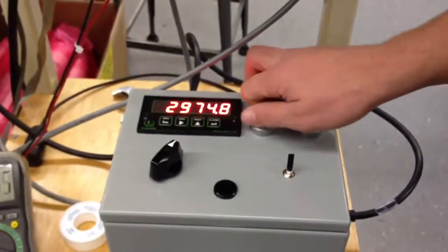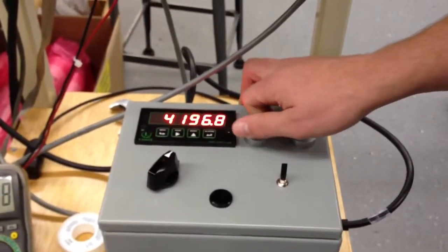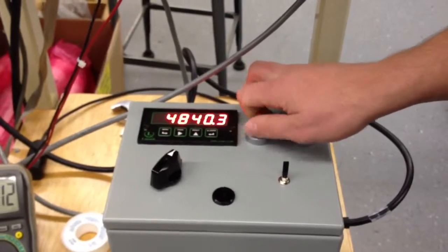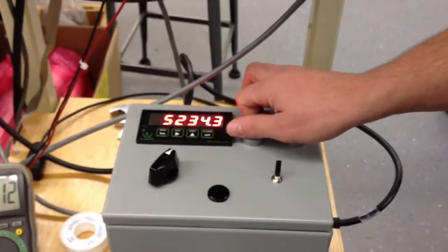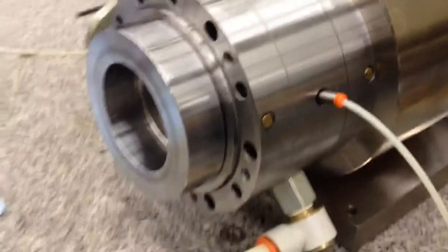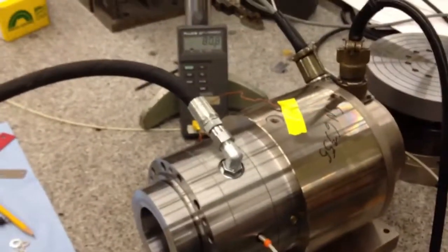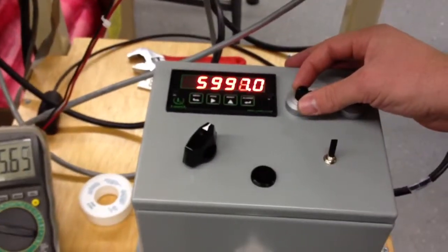All right, run it up. Three. There's three. There's four. There's five. You can start going faster and faster. There's 6,000 RPM.